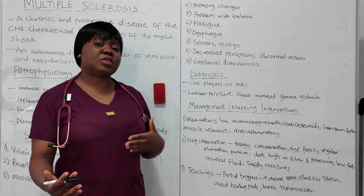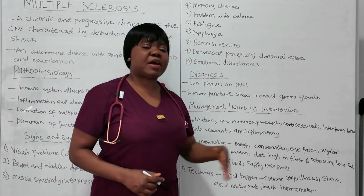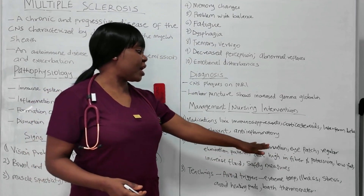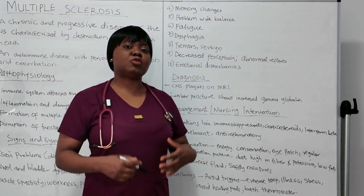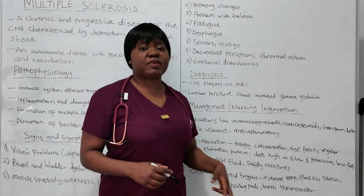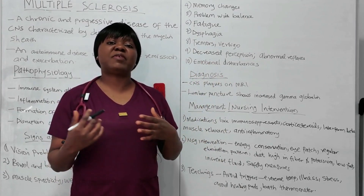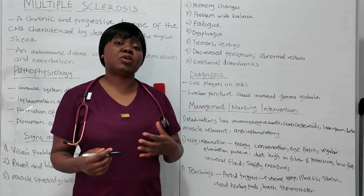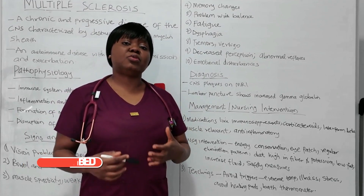Encourage a regular elimination pattern, since patients have problems with elimination. Recommend a diet high in fiber to reduce or prevent constipation. Encourage them to eat foods high in potassium, like bananas, because potassium supports muscle and nerve function. Also encourage a low-fat diet and increased fluid intake. For safety measures, since they may have decreased perception and difficulty differentiating between hot and cold temperatures or surfaces, encourage the use of a bath thermometer to test water temperature before bathing, and discourage the use of heating pads to prevent burns.